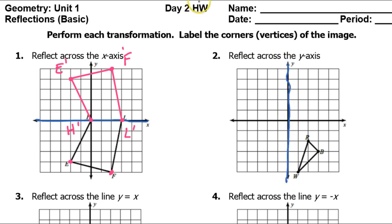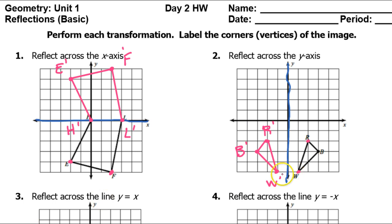For number two we will reflect over the y-axis, so we will be using the y-axis as the mirror line. Starting with point W — it's one unit to the right, so the image will be one unit to the left. Point R is two units to the right, so we go two units to the left of the y-axis. That gives us the image, and the reflection looks like this.